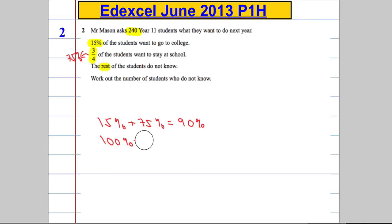So 100% subtract 90% is going to equal 10%. This is the rest.